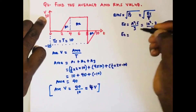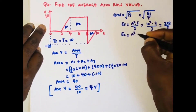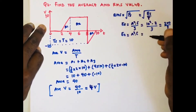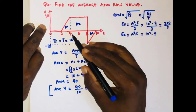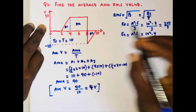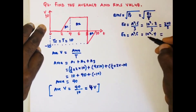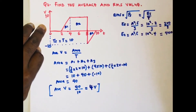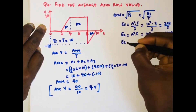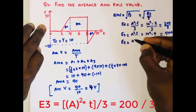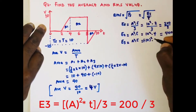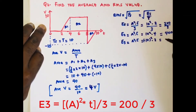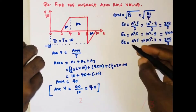E2 is for the rectangle: amplitude squared times period. That's 10 squared times 4, giving 100 times 4 equals 400. E3 is also a triangle: negative 10 squared times 2, divided by 3. That's also 200 over 3.